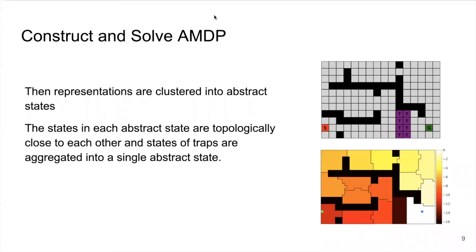Then, representations are clustered into abstract states. As you can see in the image below, the states in each abstract state are topologically close to each other and states of traps are aggregated into a single abstract state.